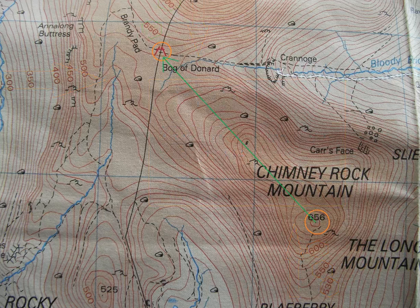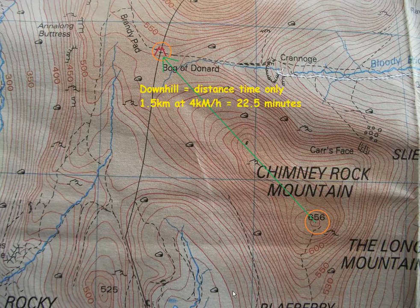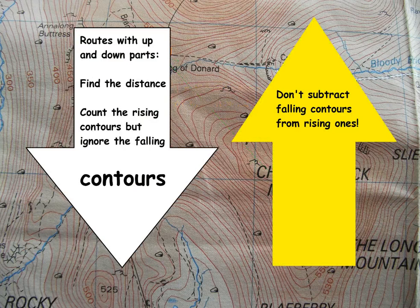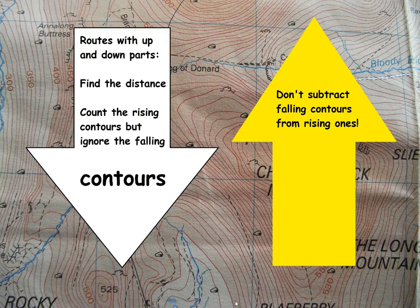If we were walking downhill, we ignore the height difference and simply say it is 1.5 kilometres at 4 kilometres per hour, which is 22 and a half minutes. For legs of the journey where we have rises and falls in the same leg, we find the distance but we only count the contours that are rising and ignore the contours that are falling. We do not subtract the falling contours from the rising ones.